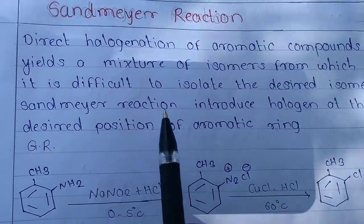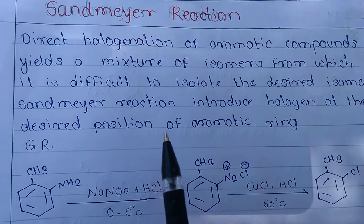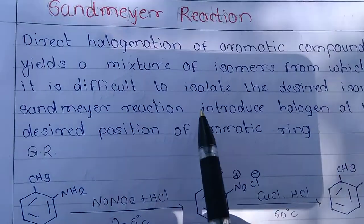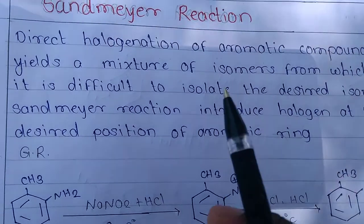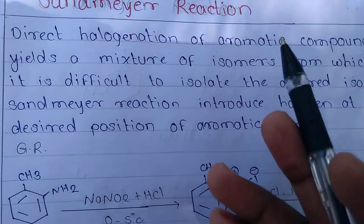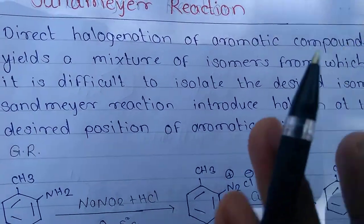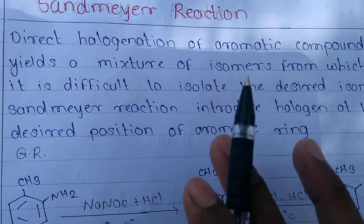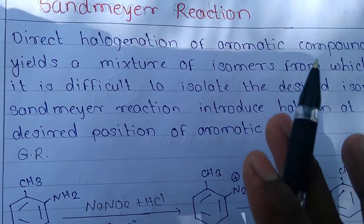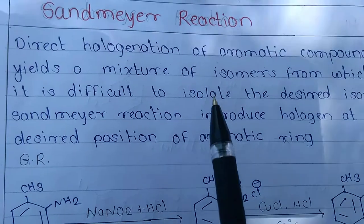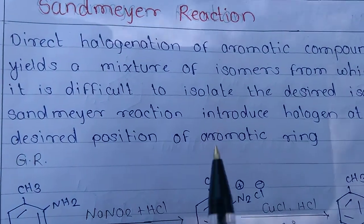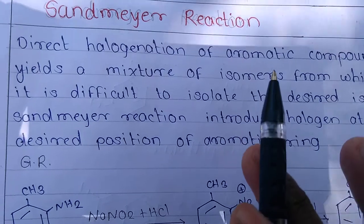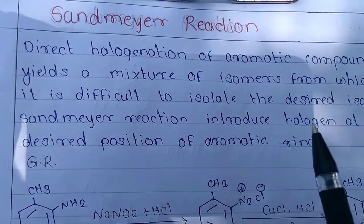We know that alkyl halides are prepared from alcohols by reacting them with PCl3, SOCl2, or concentrated HCl and ZnCl2. But aryl halides cannot be prepared by these methods because direct halogenation of aromatic compounds produces a mixture of isomers, from which it is difficult to isolate the desired isomer.